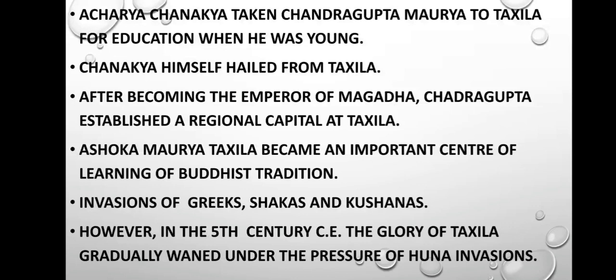Acharya Chanakya is believed to have taken Chandragupta Maurya to Takshila for education when he was young. Chanakya himself hailed from Takshila. After becoming emperor of Magadha, Chandragupta Maurya established a regional capital at Takshila. During the reign of Ashoka Maurya, Takshila became an important center of learning of the Buddhist tradition. Takshila did not lose its importance even during the invasions of the Greeks, Sakas, and Kushanas. However, in the fifth century CE, the glory of Takshila gradually faded under the pressure of Huna invasions.